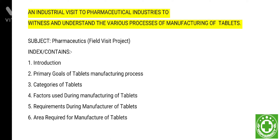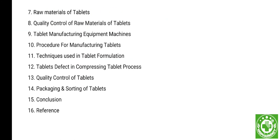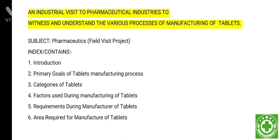The index or contents of this video are: introduction, primary goals of tablet manufacturing, process categories of tablets, factors used during manufacturing, requirements during manufacture, area required for manufacture, raw materials of tablets, quality control of raw materials, tablet manufacturing equipment and machines, procedure for manufacturing tablets, techniques used in tablet formulation, tablet defects in the compressing process, and quality control of tablets, packaging and sorting of tablets.